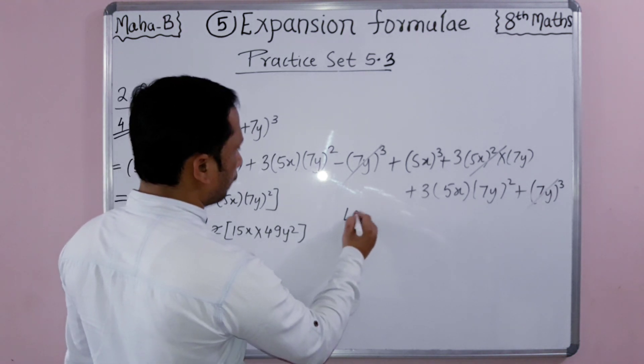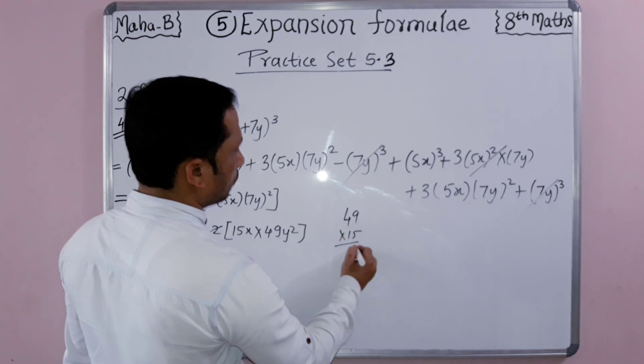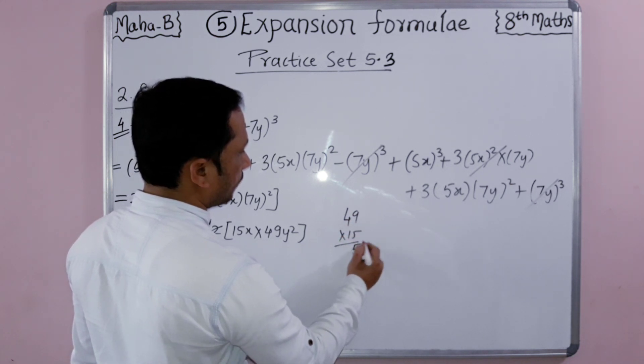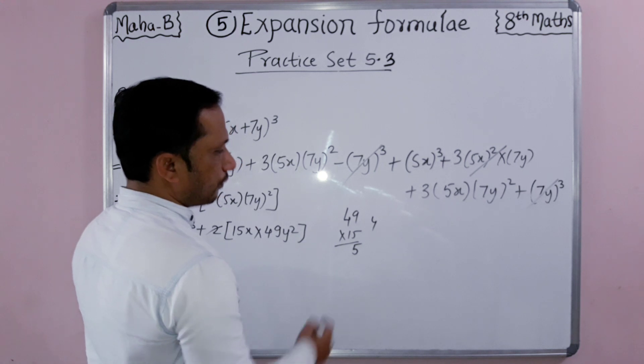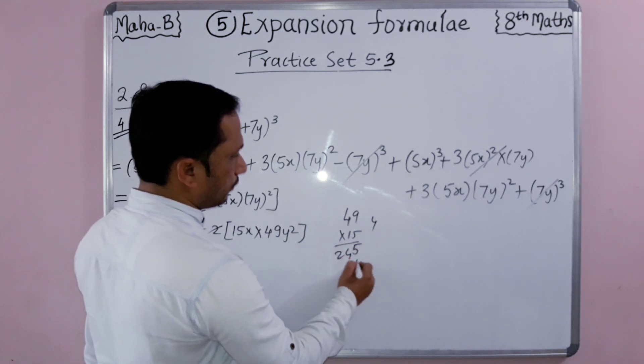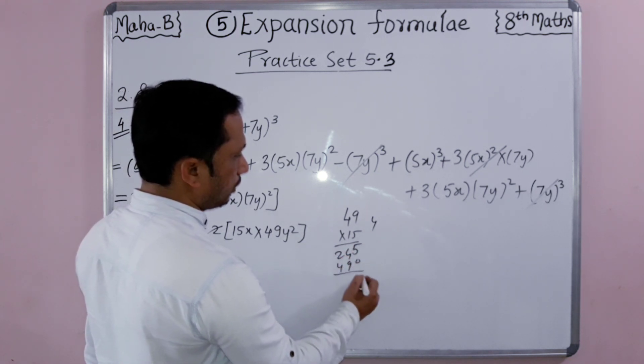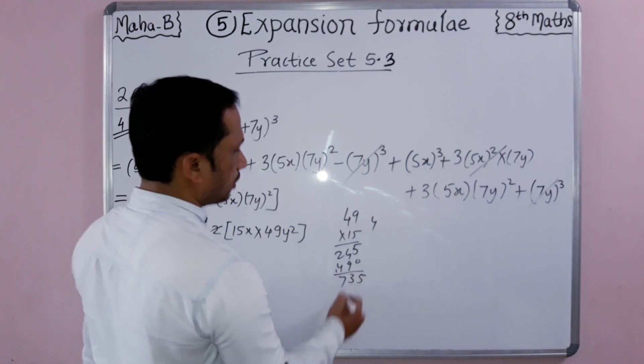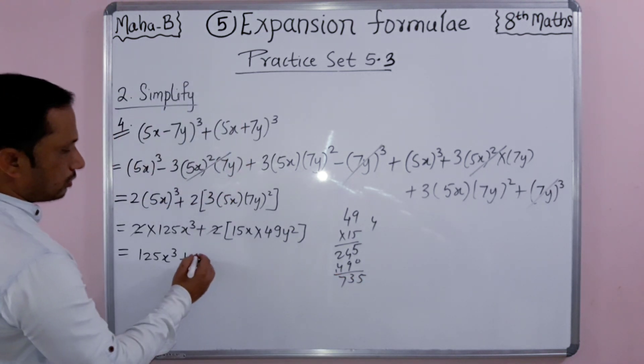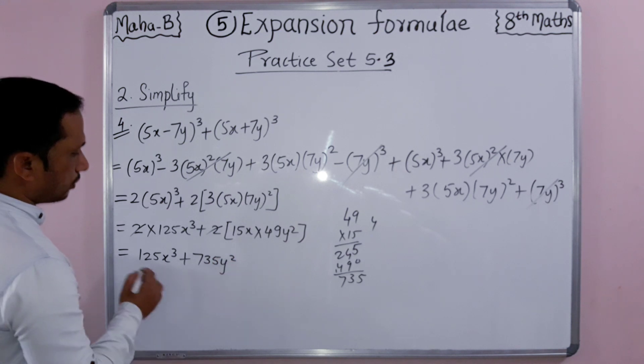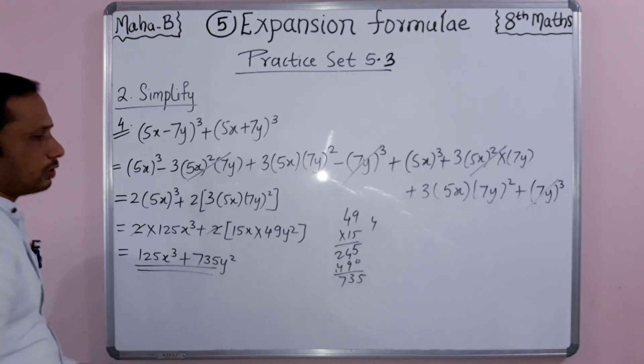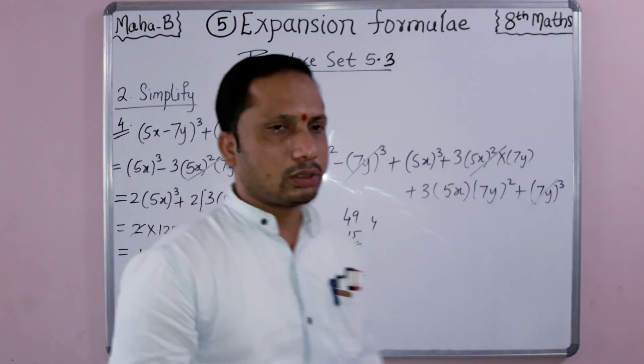So 5×9, 45, 5 is there, 4 is remaining. 5×4 is 20, and 4, 24, 8, 0, 9 and 4. 5, 3 and 7. What is it, students? So 735y². Students, so this will be our final solution.